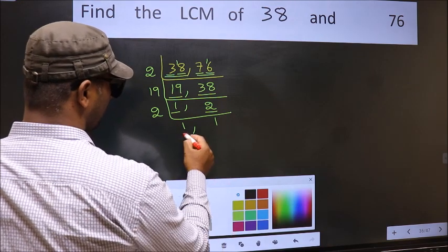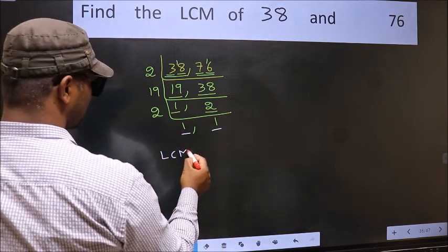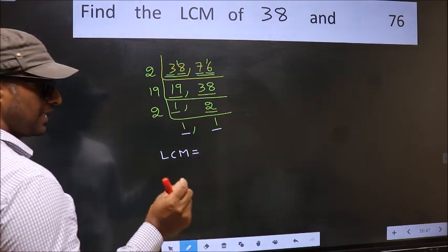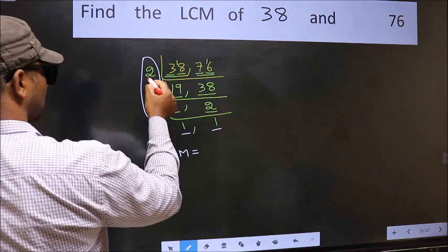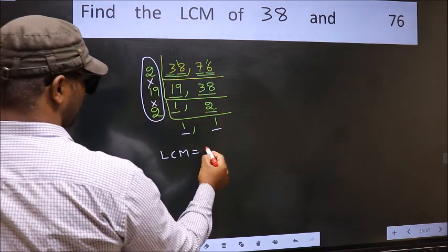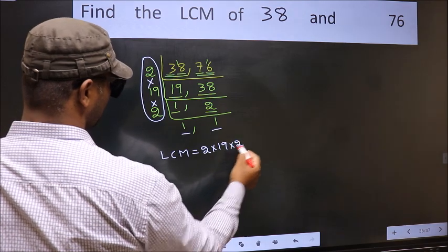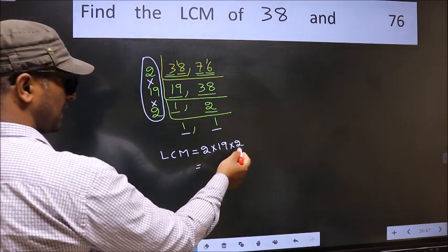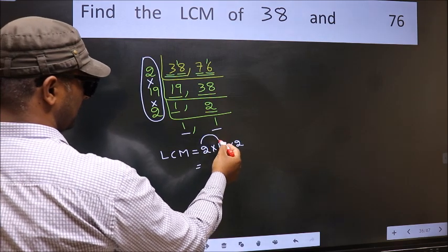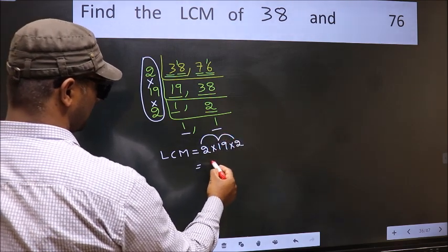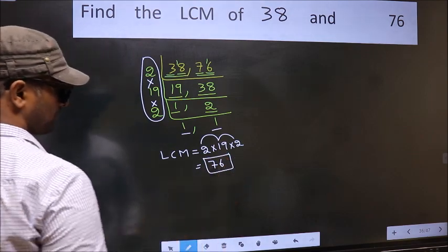So we got 1 in both the places. So our LCM is the product of these numbers. That is 2 into 19 into 2. So let us multiply these numbers. 2 into 19, 38 into 2, 76 is our LCM.